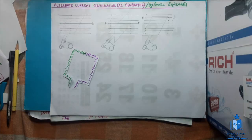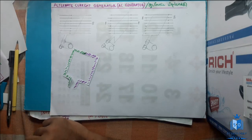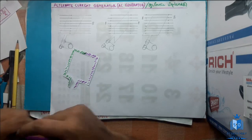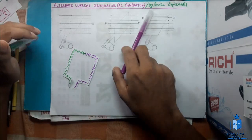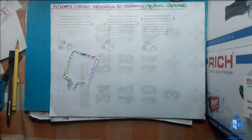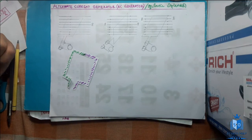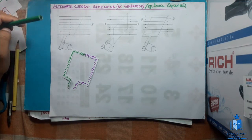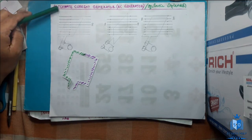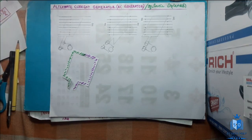The next lesson we are going to learn is the alternate current generator, or AC generator. When it comes to current, there are two types of current. One is called alternate current, the other one is called direct current.